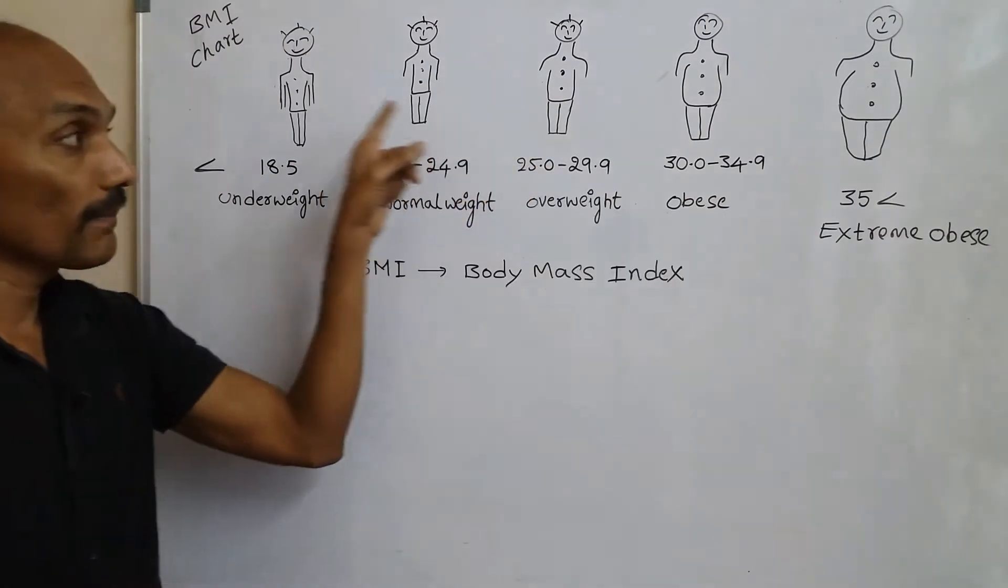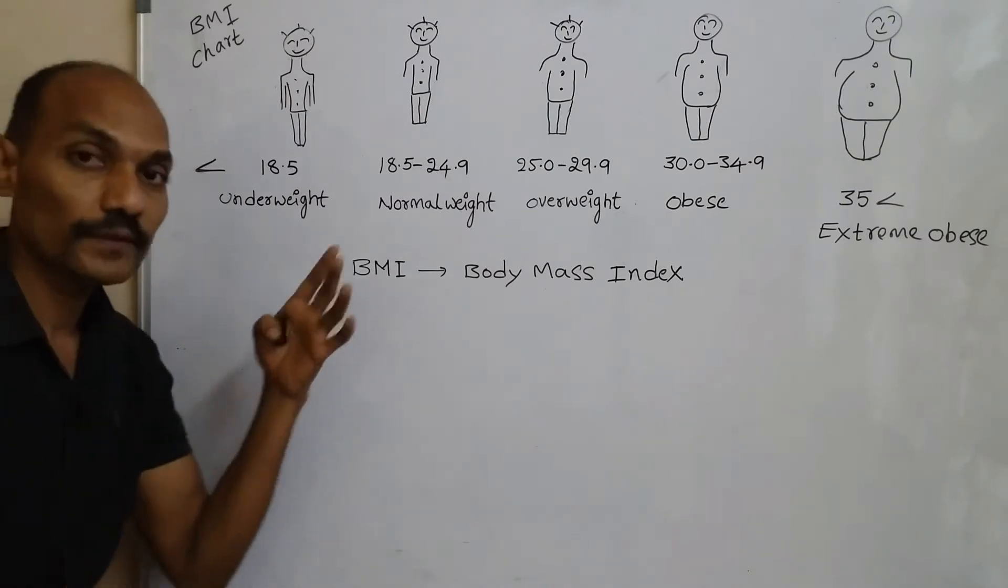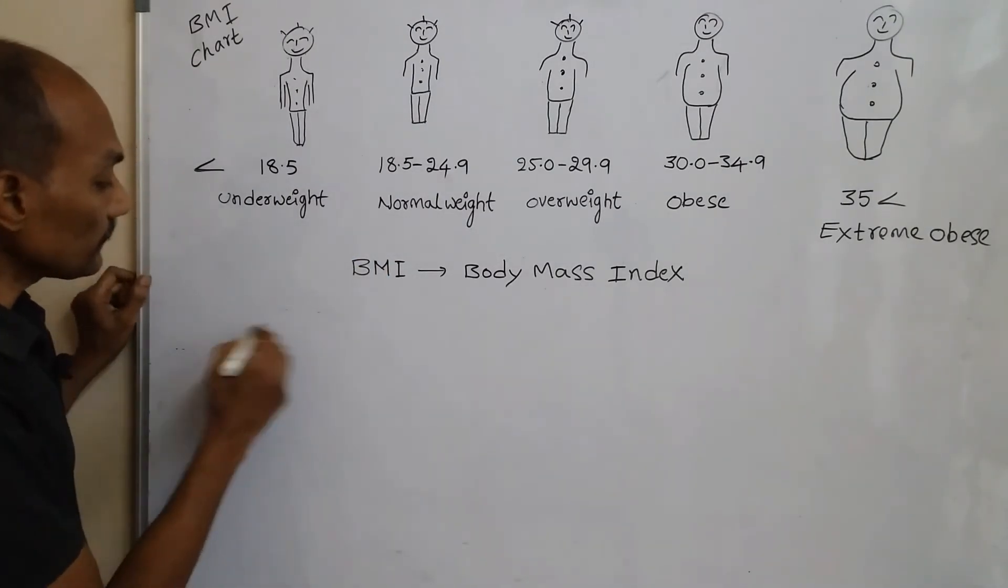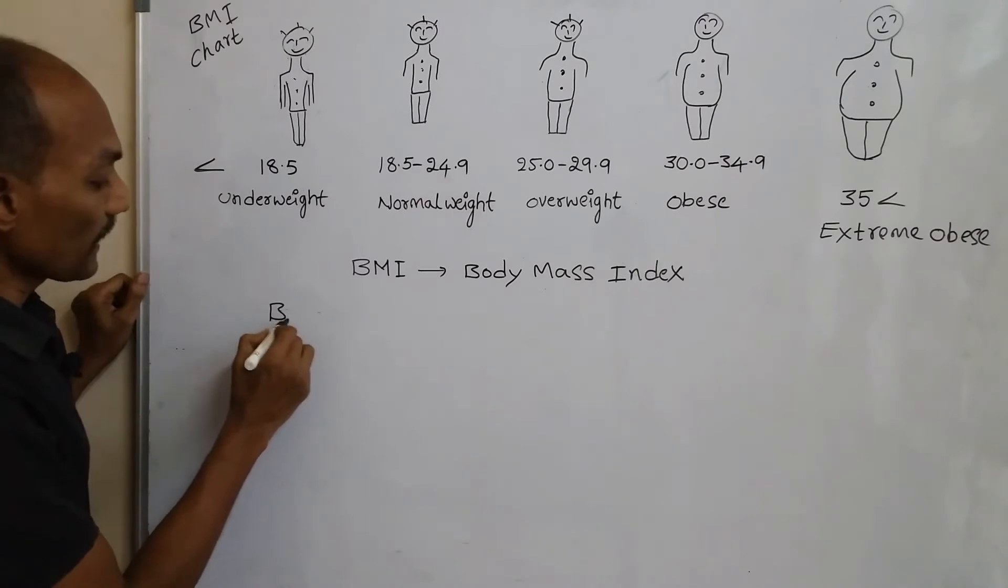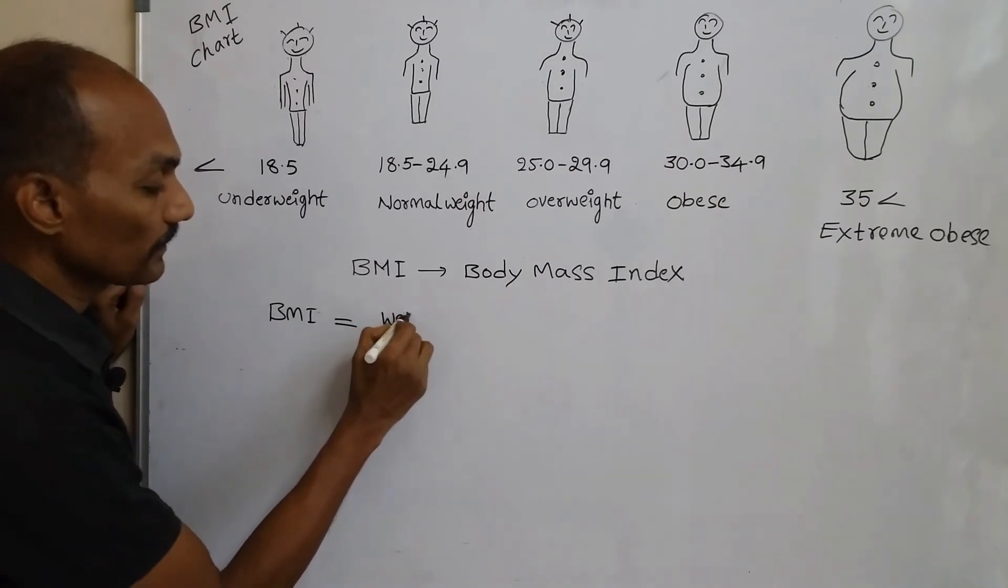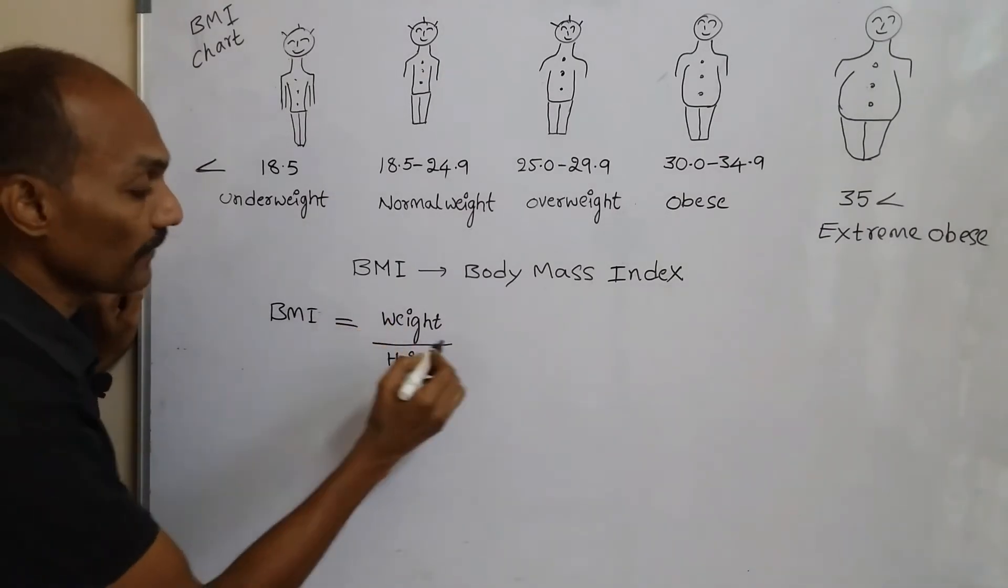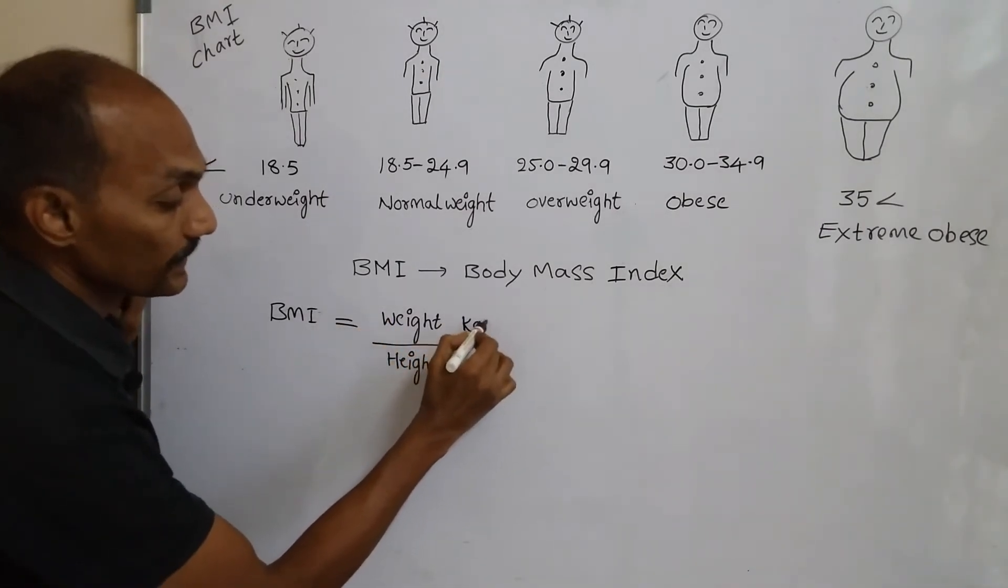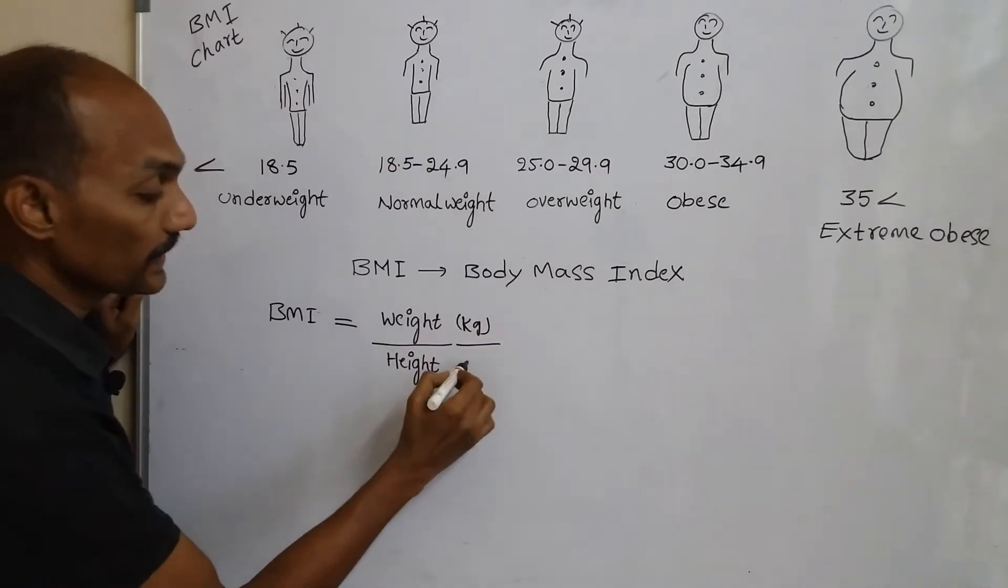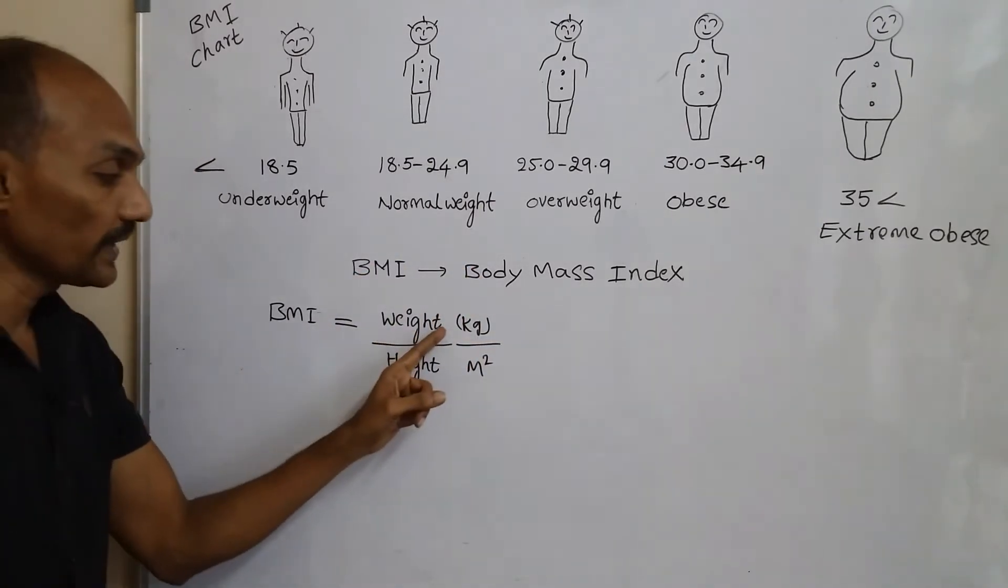This is the BMI chart. Now let's see one example - how to check BMI, how to measure BMI. The BMI formula is weight divided by height squared. We have to take weight in kilograms and height in meters squared.